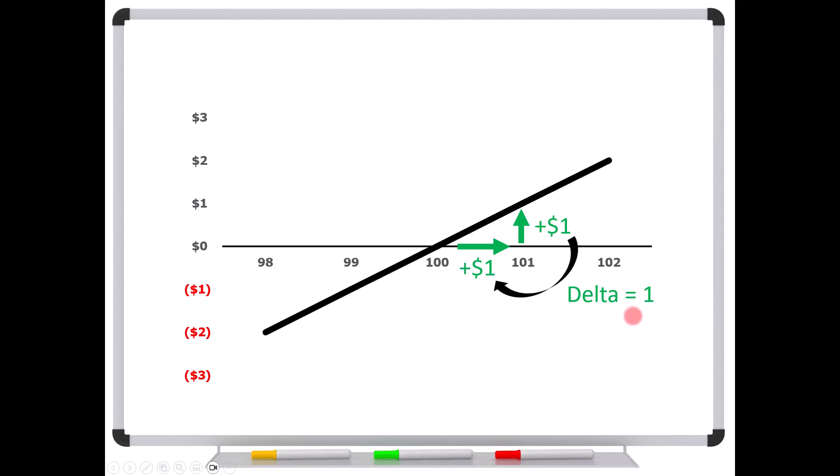The rise divided by the run is $1 divided by $1, which is a delta of 1. That's what delta 1 means. For every dollar the stock rises, you will make a dollar profit. What about if the stock falls? This is where a lot of traders think, well, that must be negative delta. Not quite. If the stock falls $1 from 100 to 99, let's call that a negative run, minus $1. How far do we have to drop down to touch that line? That's also a dollar to the downside. It's telling us if you have shares of stock purchased for $100 and it falls $1, you're going to lose $1. If we take the rise, which is a negative rise, divided by the run, which is also negative, a negative divided by a negative is still positive.